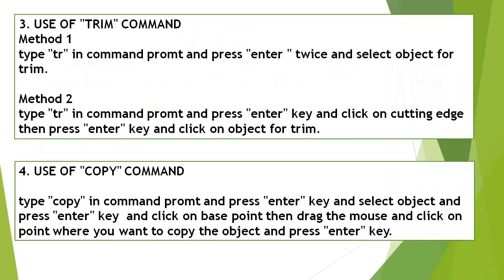Use of Trim Command — Method 1: Type TR in the Command Line Window and press Enter twice, then select the object for trim. Method 2: Type TR in the Command Line Window and press Enter, click on the cutting edge, then press Enter and click on the object for trim.